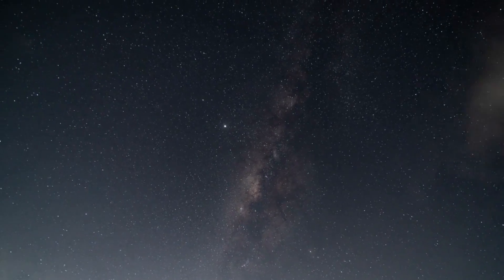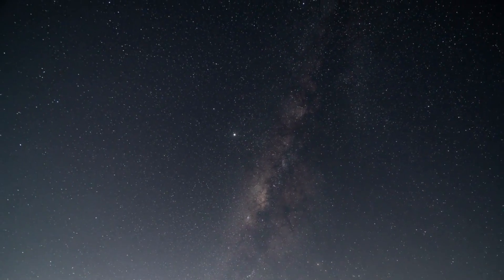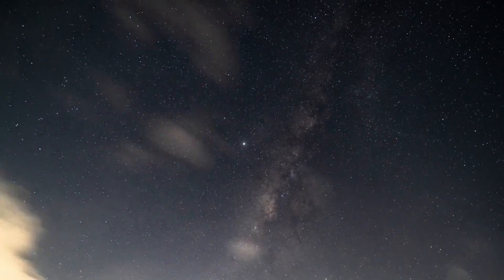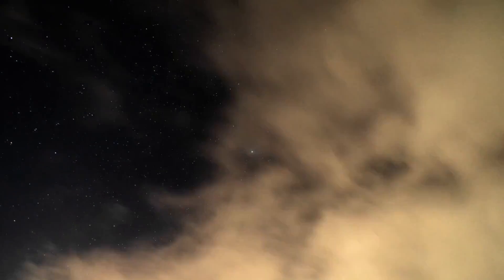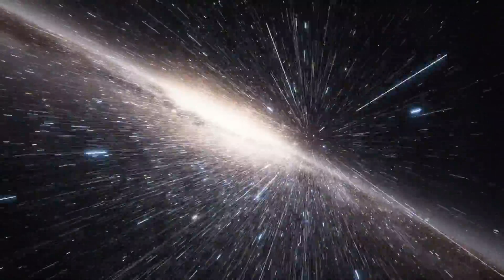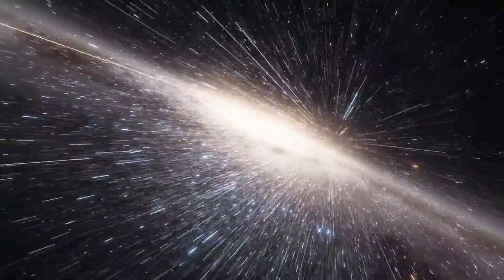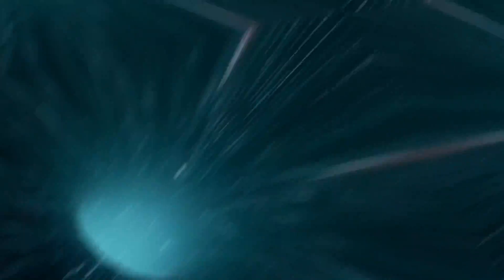So by examining similar galaxies at different stages of their lives throughout the universe, we should be able to see a pattern in how they all grow. Because light moves at a constant speed, they were able to see galaxies over 9 billion years. This means that the further away we look, the further back in time that we can see, because light takes longer to reach us as we get further away.